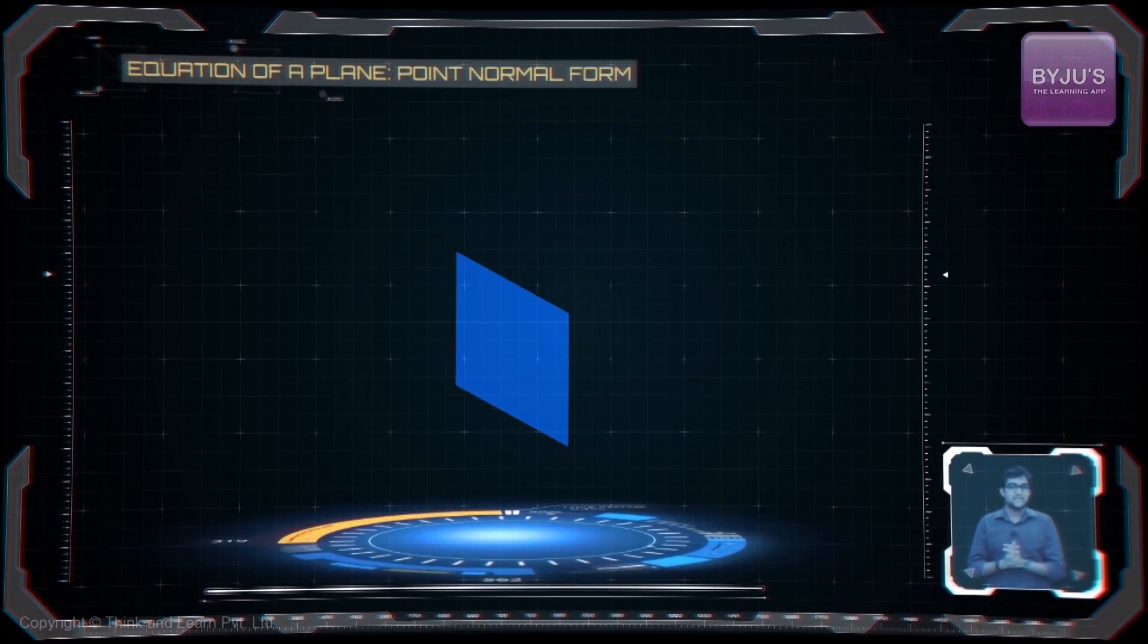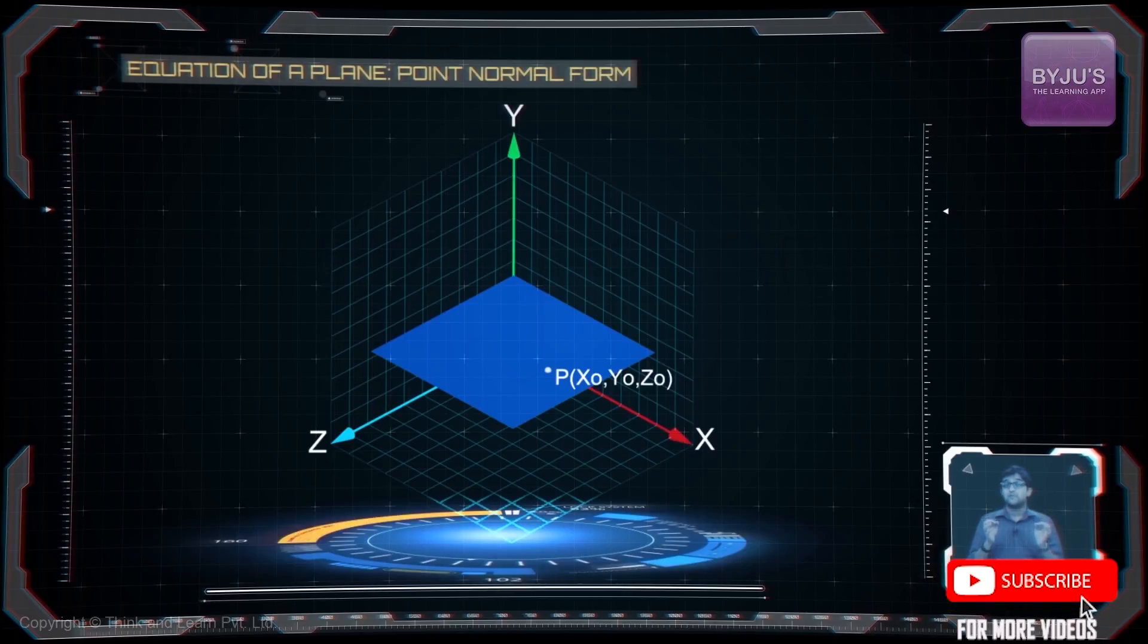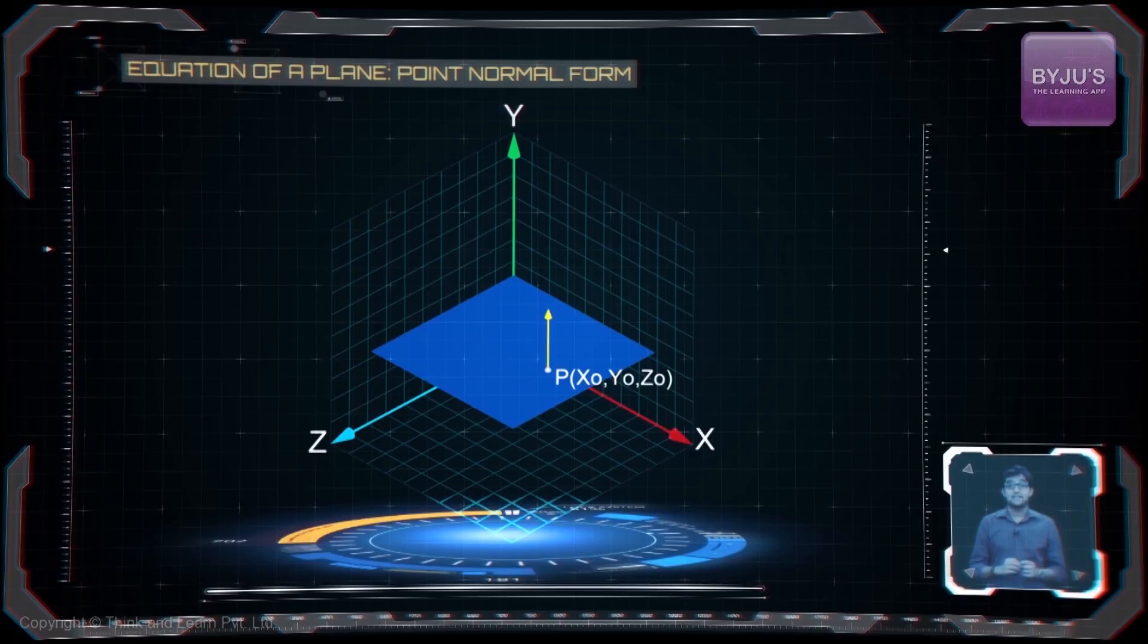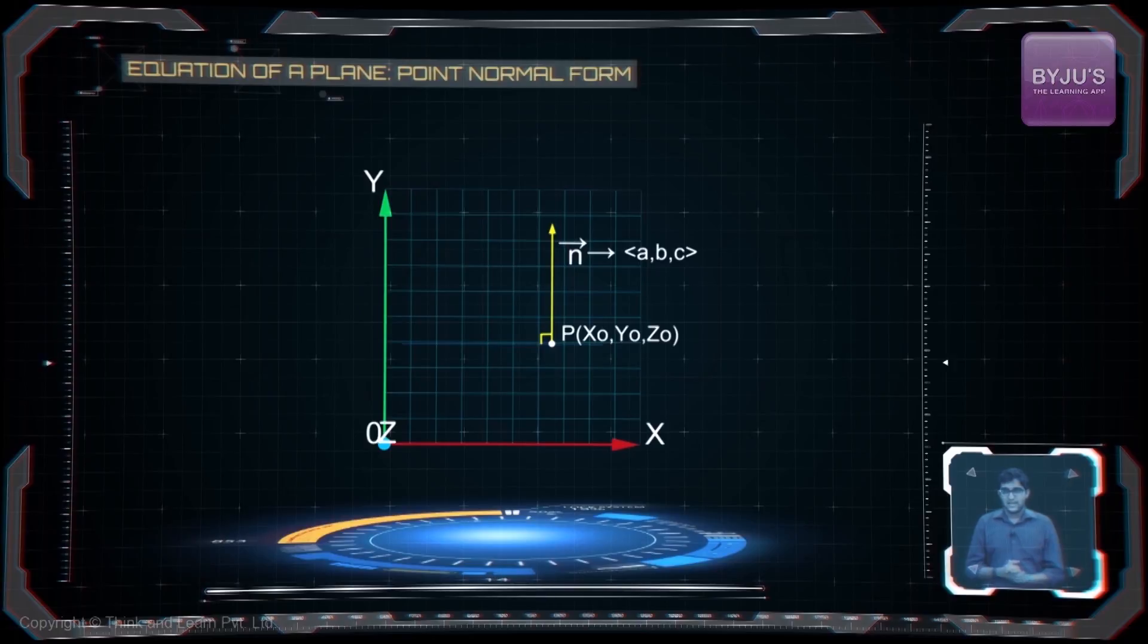Now let's consider this plane. P, that's x naught, y naught, z naught, is a given point lying on the plane. I have a vector n, that's a, b, c, which is a vector normal to the plane.